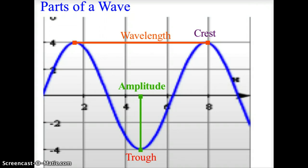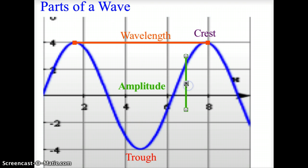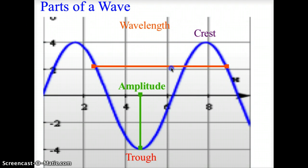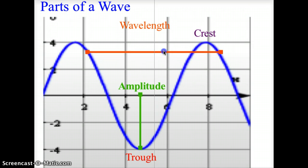Light can behave as a particle or as a wave. When acting as a wave, we need to understand its components. The top of a wave is the crest and the bottom is the trough. The distance from the middle of the wave to the crest — or to the trough — is called the amplitude. Wavelength goes from the crest of one wave to the crest of the next, covering the entire length of one wave cycle, and remains consistent throughout.